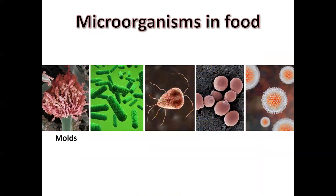Pictured here are the five types of microorganisms relevant to food. Molds and yeast do not typically present a food safety issue; they are associated with spoilage. There are types of molds that can produce toxins as they grow in food, but these are considered to be chemical hazards. Certain species of bacteria, parasites, and viruses can lead to foodborne illness and these are biological food hazards.